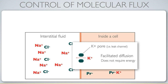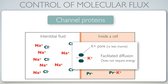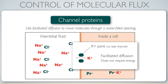The potassium pore is also known as a leak channel. Because the potassium is moving down its chemical concentration gradient, that process doesn't require energy, and so that transport is what we call facilitated diffusion. The potassium pore is an example of another kind of transmembrane protein called a channel protein.